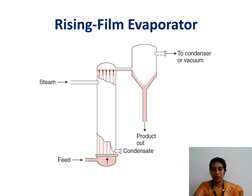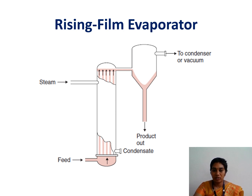Next is the rising film evaporator. Here the feed material rises from bottom to the top, which is why it is called a rising film evaporator. The feed enters at the bottom and rises inside the tubes from bottom to top. After concentrating, the product is transferred to the calandria section where vapor and product are separated and the concentrated product is collected at the bottom. Steam enters from the side of the evaporator and is distributed over the entire surface of the tubes.